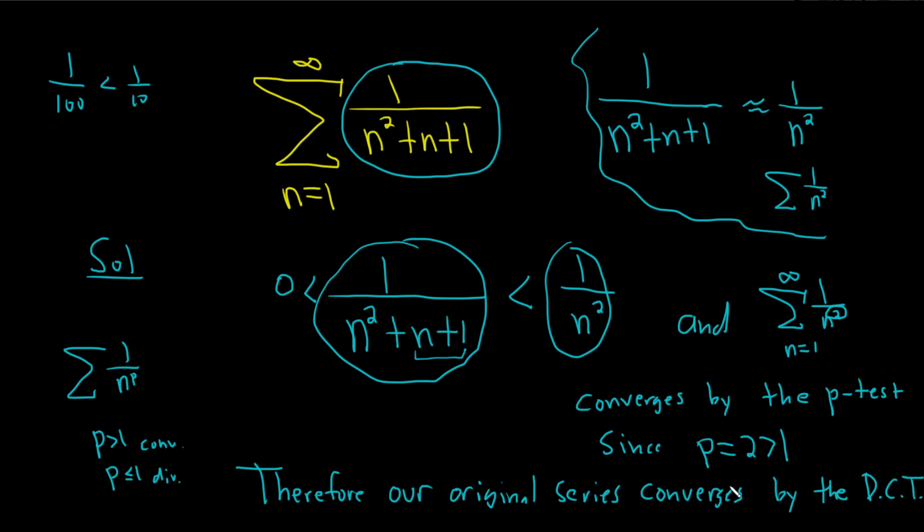The reason they call it the direct comparison test is because you're directly comparing it to another series. You might say, why don't you just call it comparison test? Well, there's something called the limit comparison test, which uses a limit to make the comparison. So that's why they add the extra word in the name.